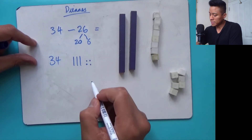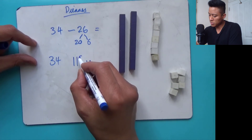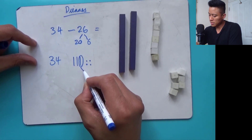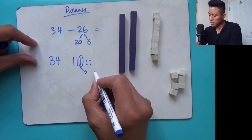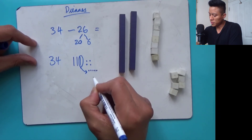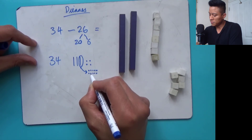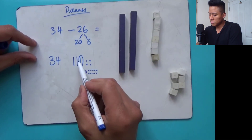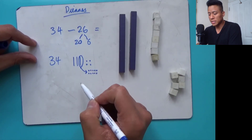We can't subtract six from four ones, so we're going to have to exchange this ten here. I'm going to circle it and exchange it for ten ones: one, two, three, four, five, six, seven, eight, nine, ten. I like doing things in fives because it's easier to count. So that's no longer three tens — it's now two tens.